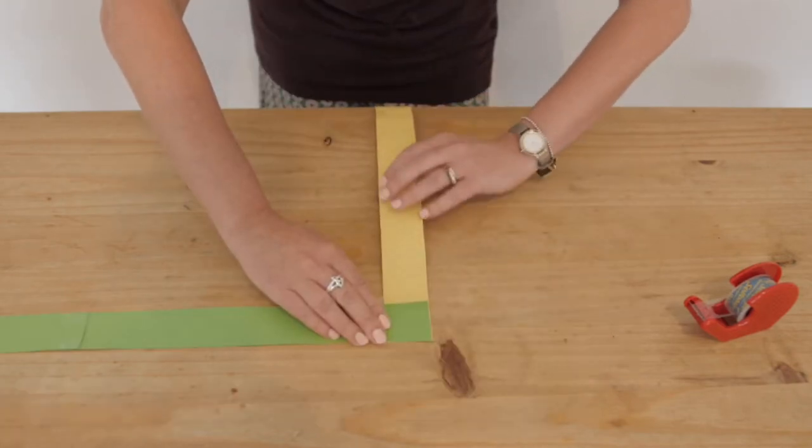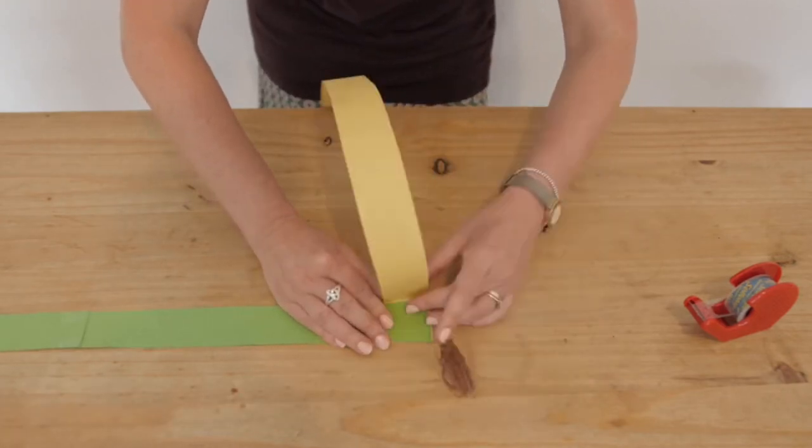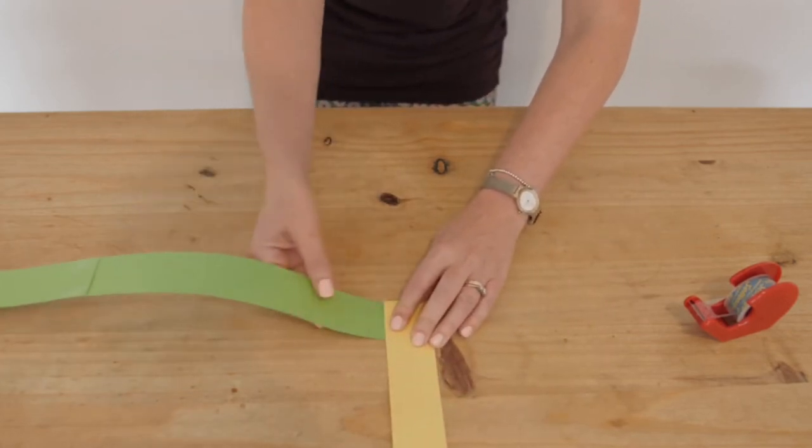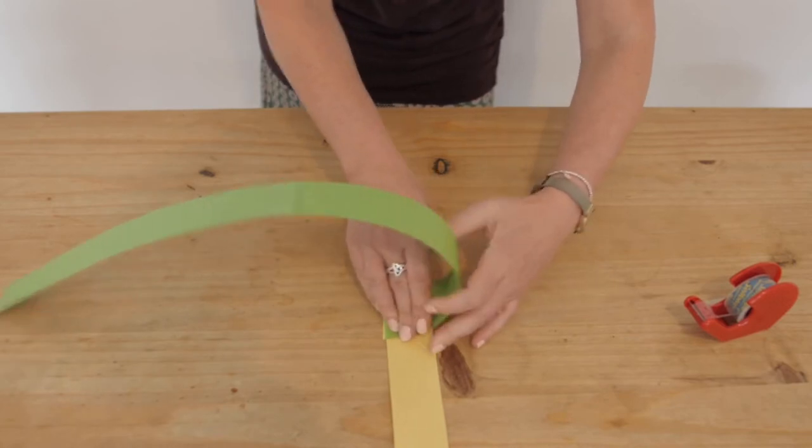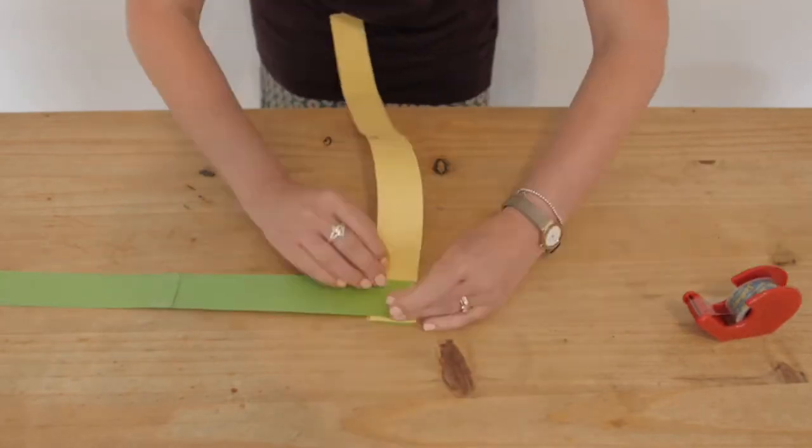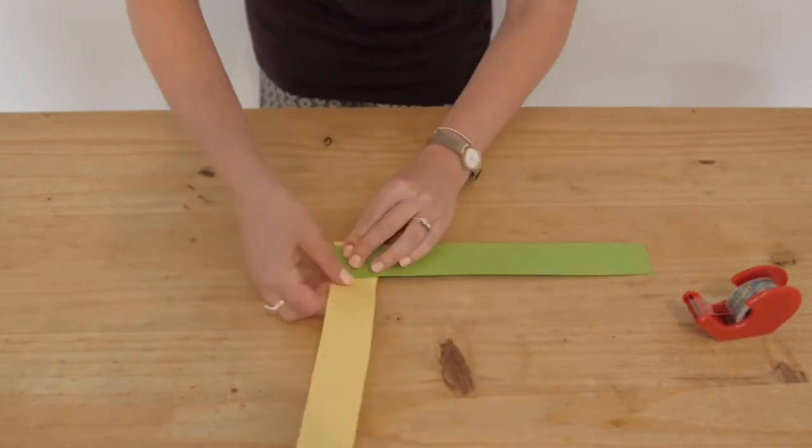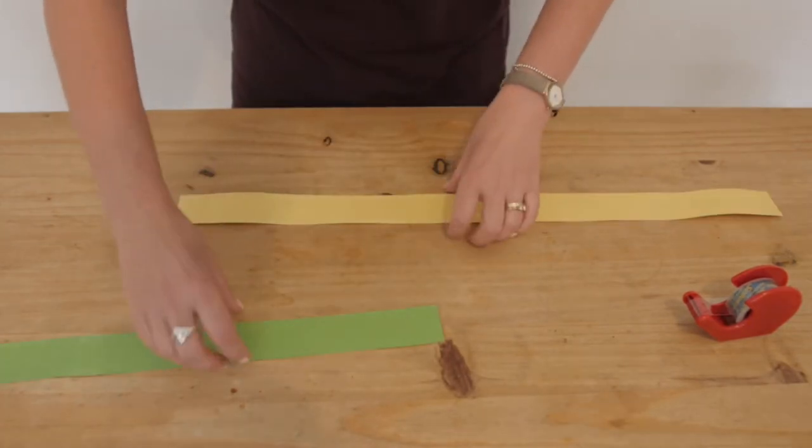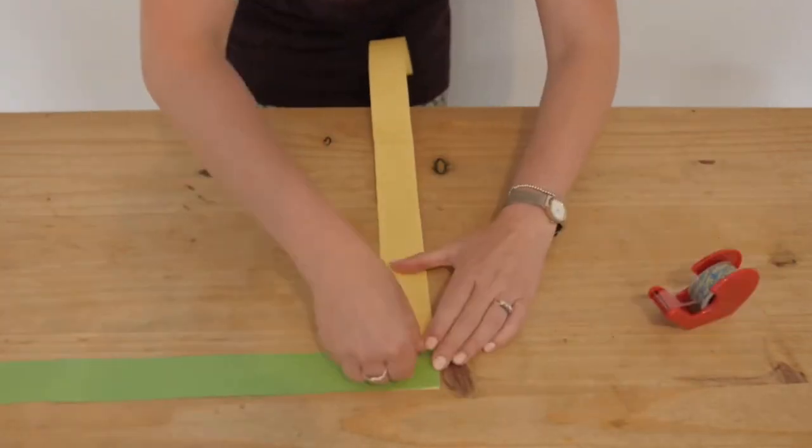So you are going to fold the bottom piece over the top of that one and then we are going to keep going with this action, keeping on folding the card over. And we are going to do exactly the same thing with our other strips.